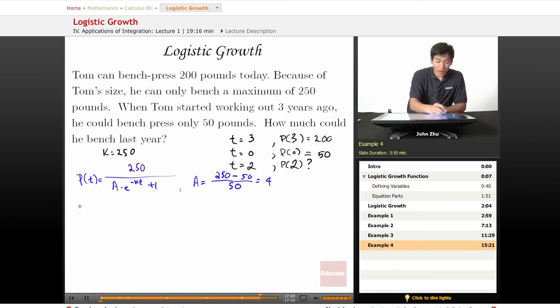So then our growth model becomes P of T equals 250 over 4 times E to the negative KT plus 1. Well, it's not finished because we still have to solve for this K value, this constant.